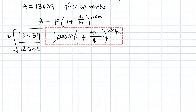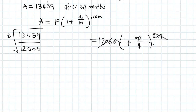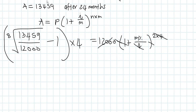That's the kind of thing you do on a calculator — you can't do it nicely by hand in the exam. Subtract one, which gets rid of that term. Lastly, multiply the whole thing by 4, which gives us m percent. Put this into your calculator exactly as you see it, and m percent comes to 0.57784.